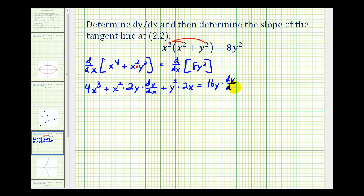This equals the derivative of 8y squared with respect to x, which would be 16y times dy/dx. Again, the term involves y, therefore we have to apply the chain rule, so we have an extra factor of dy/dx. So now we have to solve this for dy/dx, so the rest is going to be algebra.